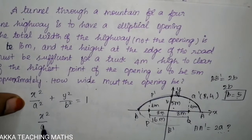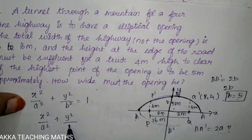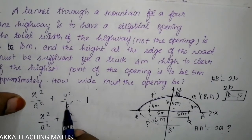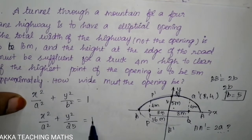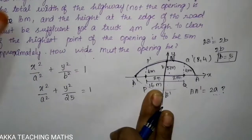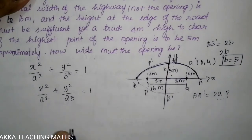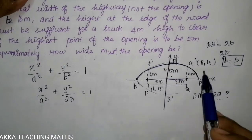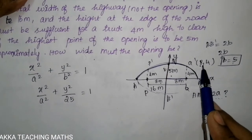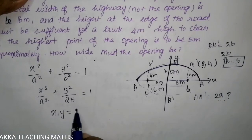Now we substitute x² / a² + y² with b² = 25/4, so y² / (25/4) equals 1. We now add a value and use the passing point (8, 4) — substitute x = 8 and y = 4 into the equation.